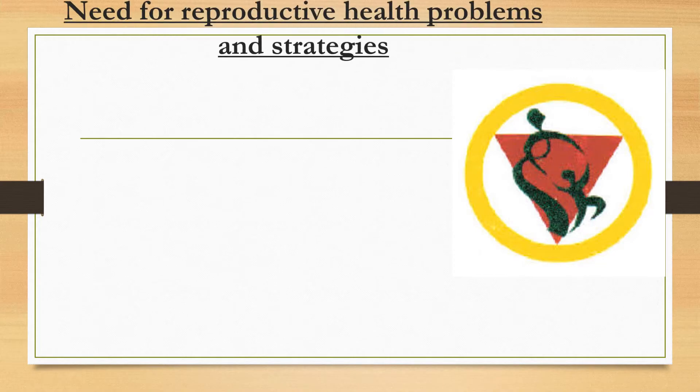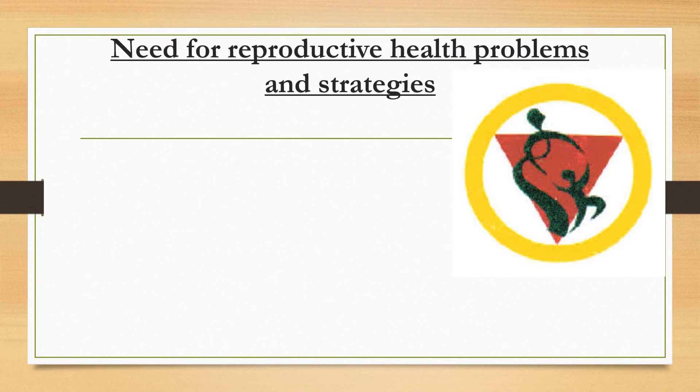Need for reproductive health problems and strategies. First of all, we should know what are all the problems in reproductive health. The first one is overpopulation, early marriage, health of mother, deformities, maternal and infant mortality rate, and sexually transmitted diseases.